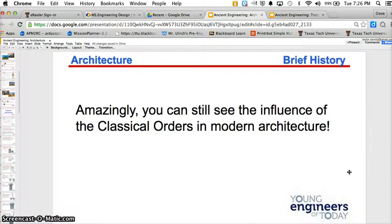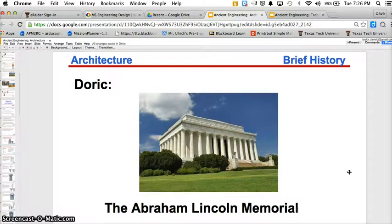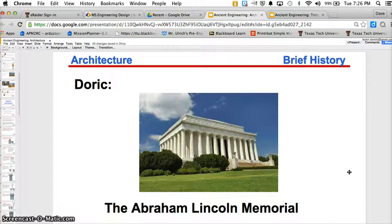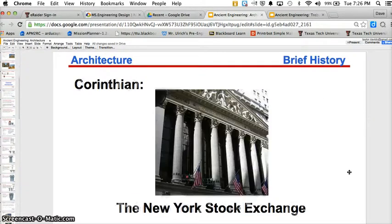Basically, you can still see the influence of the classical orders in modern architecture. For example, Doric can be seen in the Abraham Lincoln Memorial. Ionic can be seen in the Jefferson Memorial. And the Corinthian can be seen in the New York Stock Exchange.